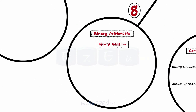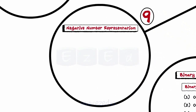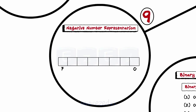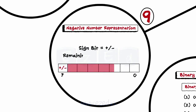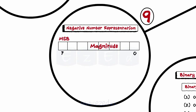Adding two binary numbers together is easy. Keep in mind the following four addition rules: 1. 0 plus 0 equals 0. 2. 0 plus 1 equals 1. 3. 1 plus 0 equals 1. 4. 1 plus 1 equals 10. Negative numbers can be represented in sign magnitude, where a single bit represents the sign of the number (plus or minus) and the remaining bits represent the magnitude. A most significant bit of 0 represents plus, while a most significant bit of 1 represents minus.